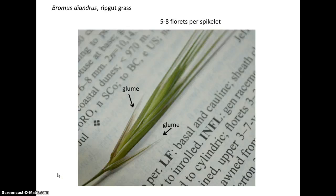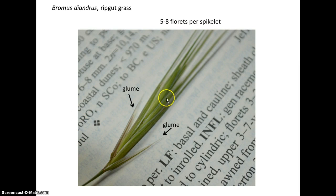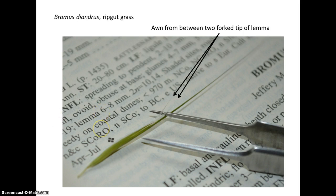Moving on to another grass, Bromus diandrus, or ripgut grass — it's very rough, so it wouldn't be too good to swallow. It has a very open inflorescence. This is just one spikelet, and notice we have a glume and another glume. In this case, we have five to eight florets in this spikelet. If we look at one floret — meaning lemma, palea, and flower — we're seeing the back of the lemma, and the awn actually comes from right between the two-forked tip of the lemma.